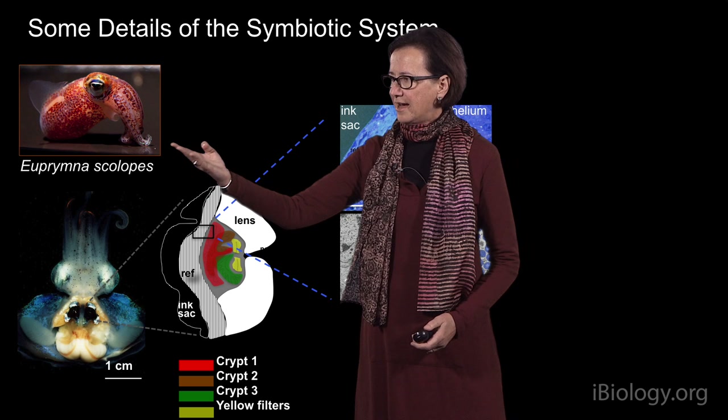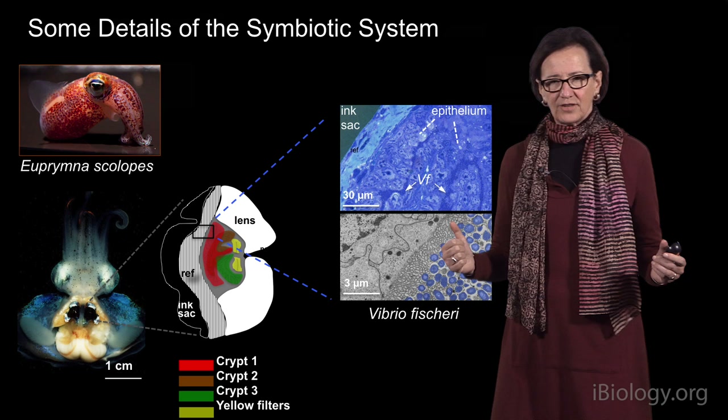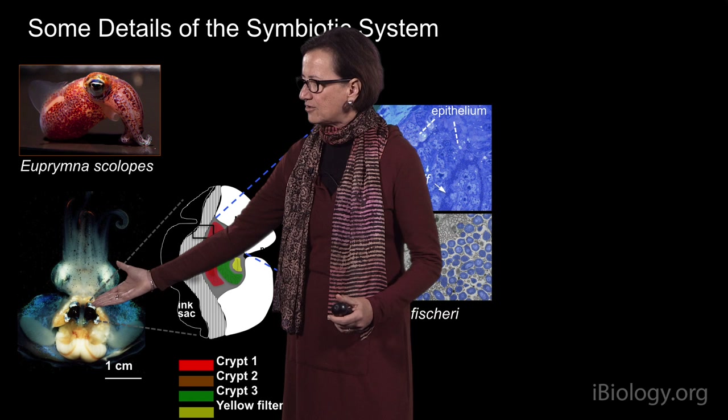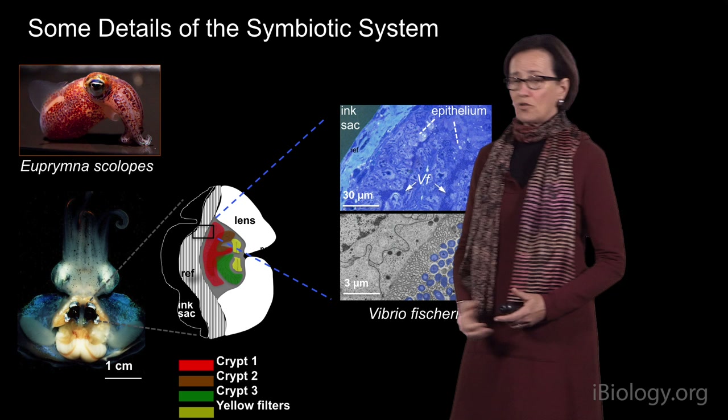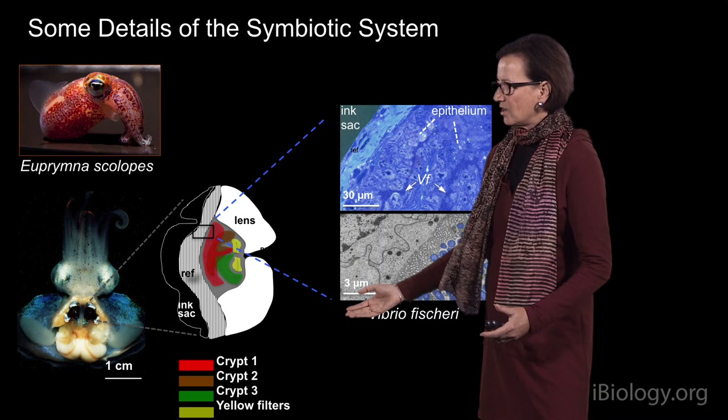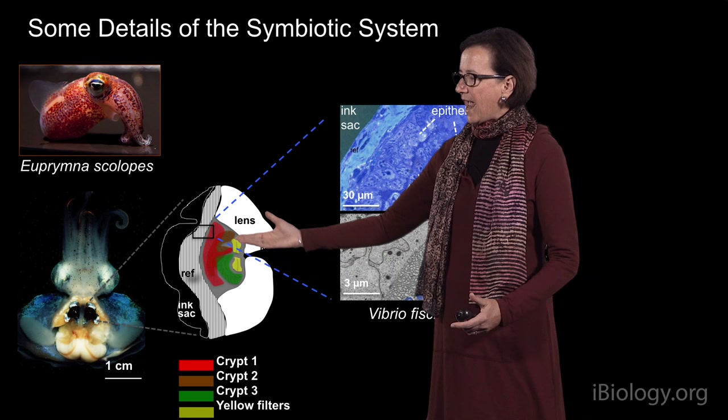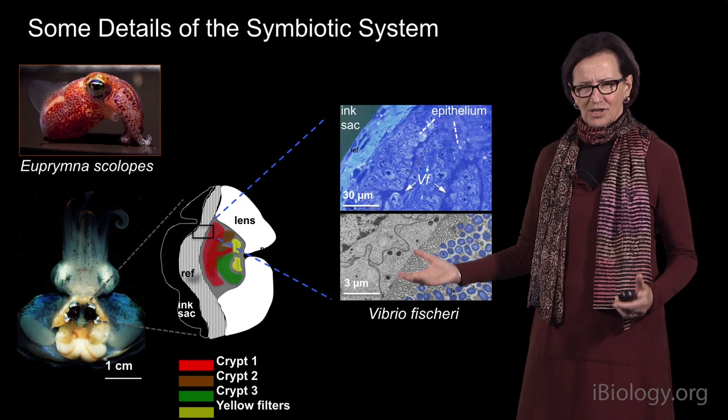Some details about the symbiotic system: this adult Euprymna, if you were to open the body cavity, has a bilobed light organ in the center of the mantle cavity — it looks like two kidneys together. If you looked at one of those lobes, you would see that in the middle there are a set of crypts, and those crypts are the epithelia that support the culture of the symbiont, Vibrio fischeri. There are three crypts in the light organ.